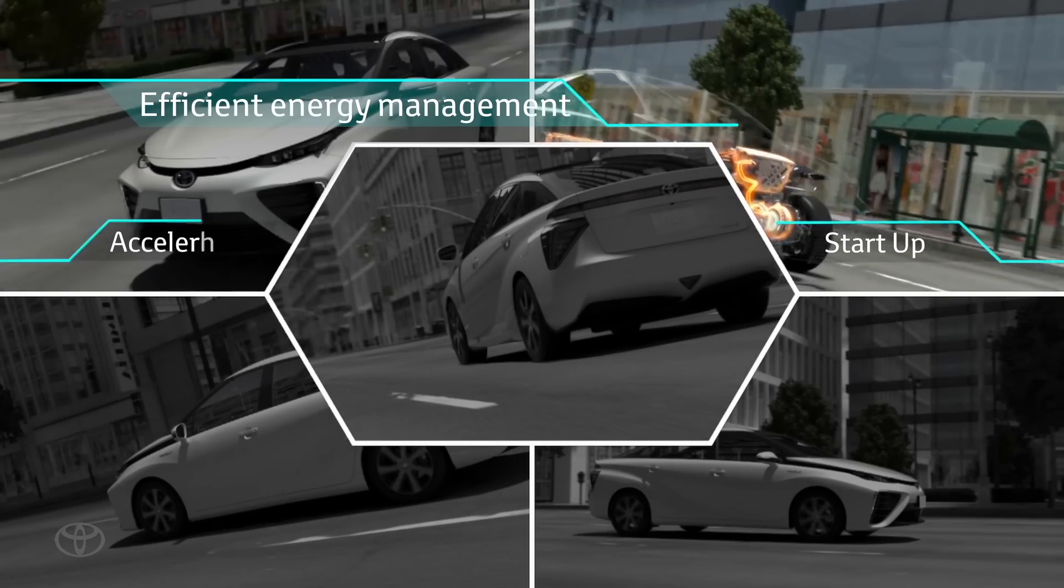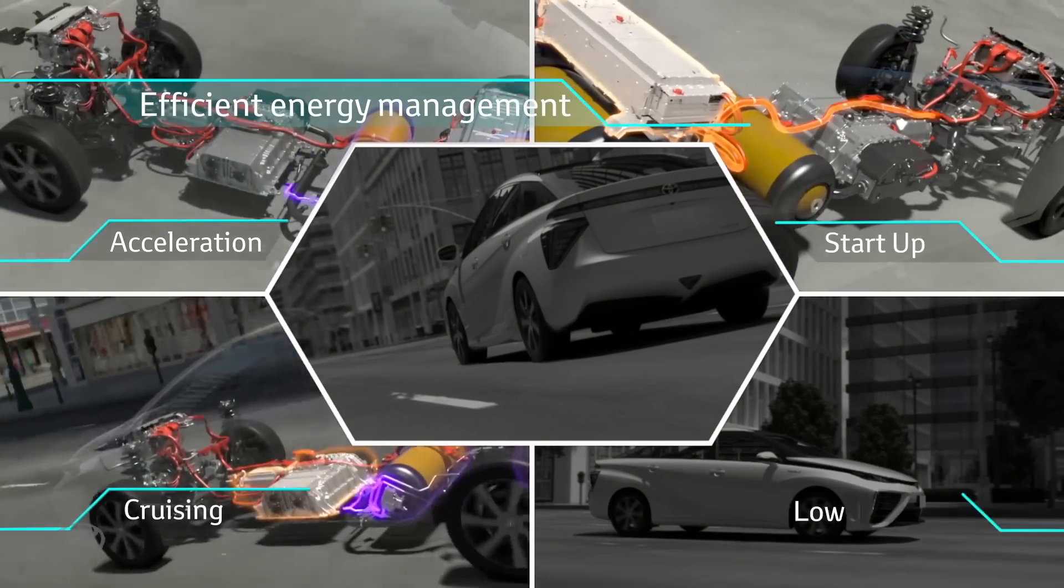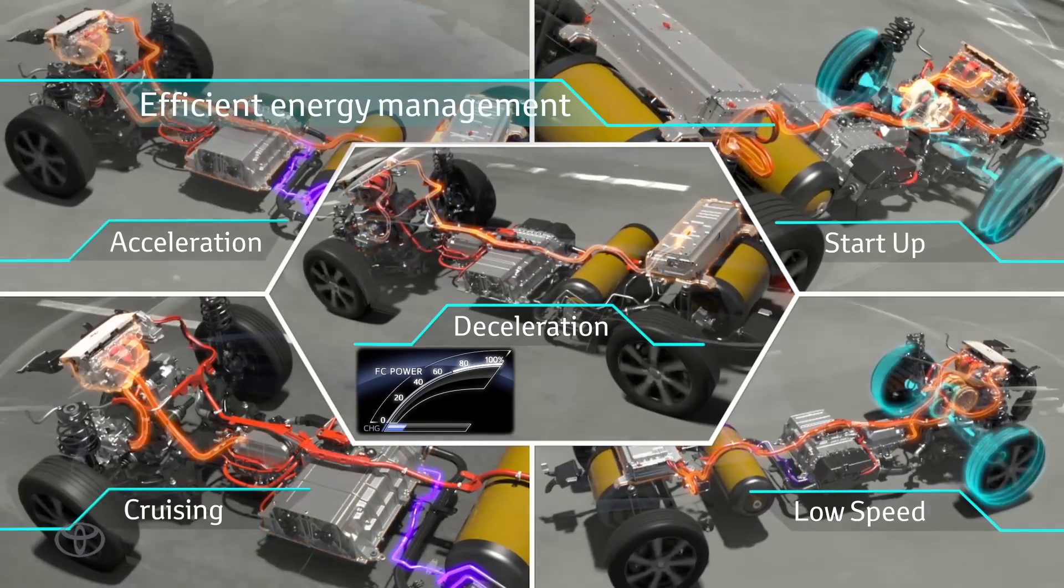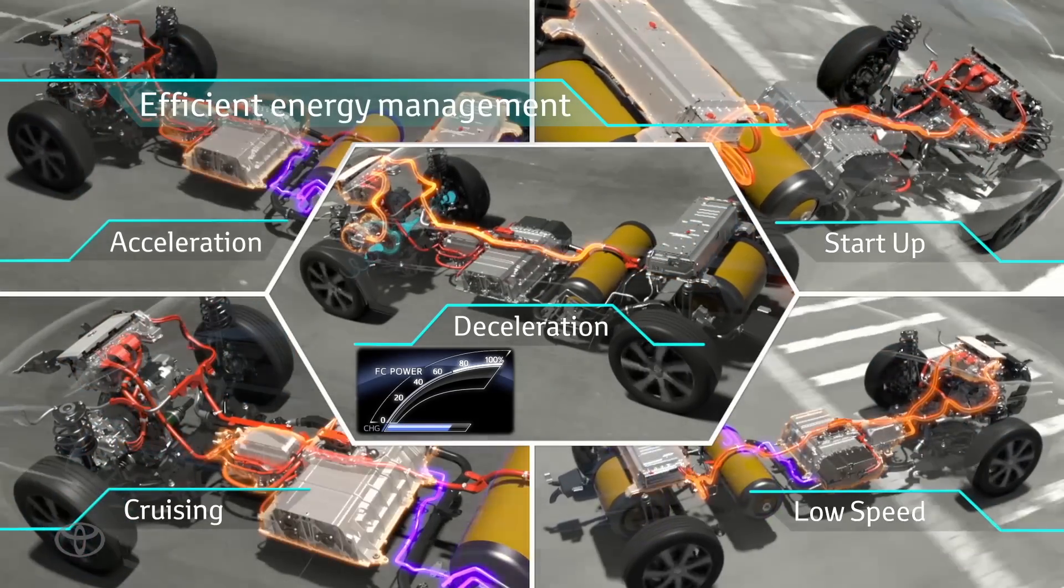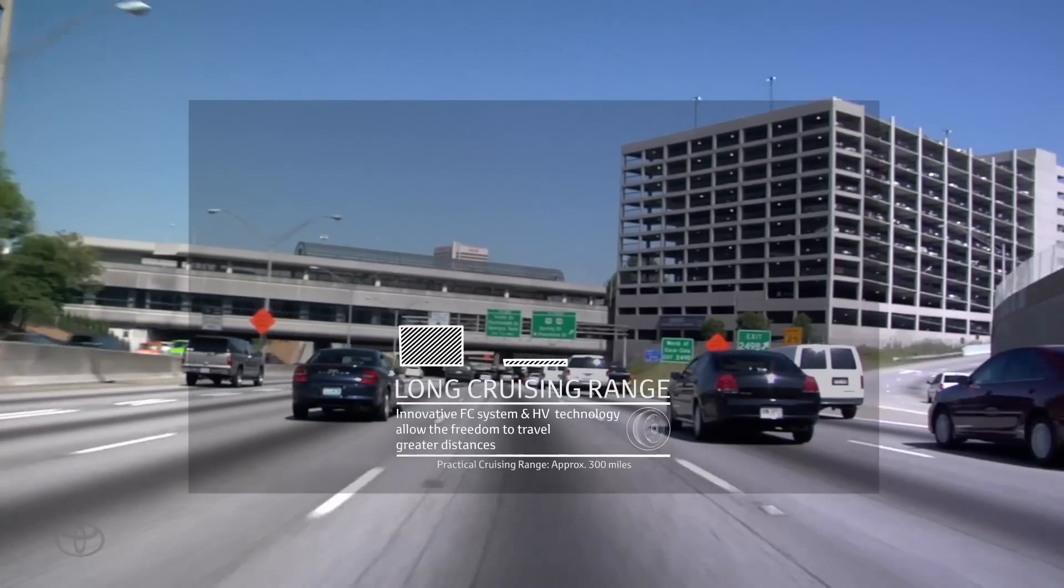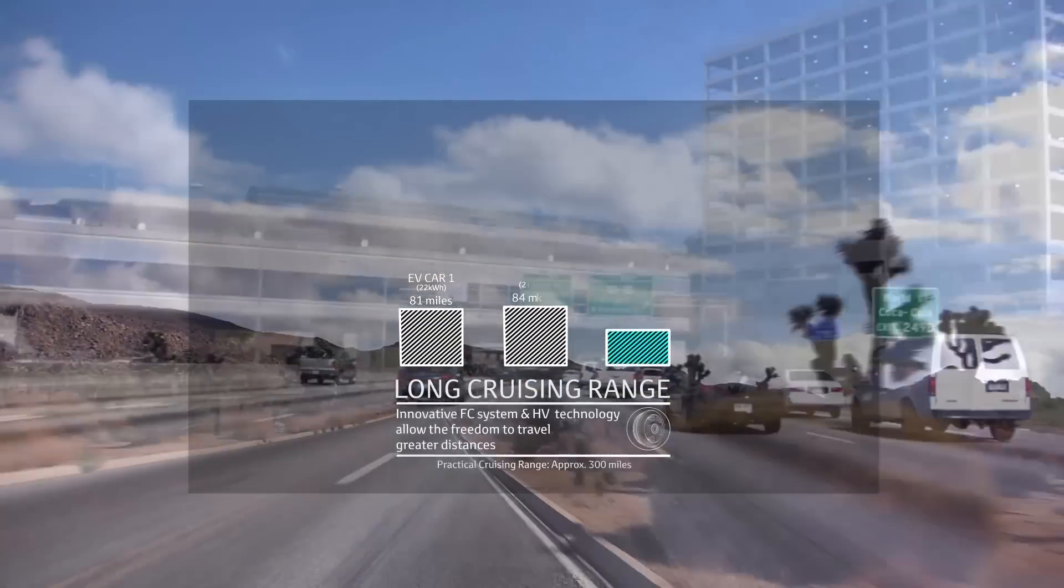FCV controls the electricity created by the fuel cell using technology developed from the hybrid vehicle. The motor works as a generator, gathering energy when the car speed is low. This accumulated energy is stored in the battery to support the fuel cell when accelerating.